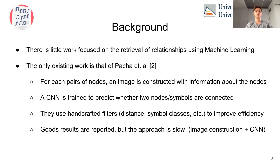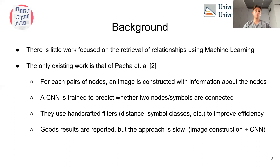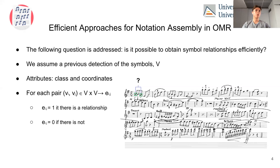There is little work focused on the retrieval of relationships using machine learning techniques. The only existing work is that of Alexander Pacha and colleagues. In this work, for each pair of nodes an image is constructed with information of the nodes, and a convolutional neural network predicts whether two nodes or symbols are connected. They use handcrafted filters like distance in pixels and the possibility of a connection based on symbol classes to improve efficiency. Results are reported but the approach is slow due to the image construction and the forward pass of a convolutional neural network.